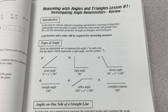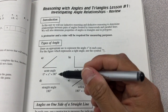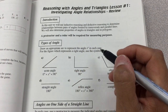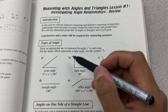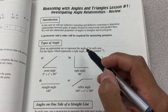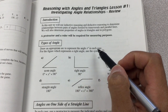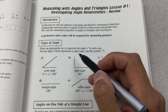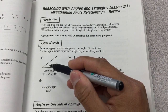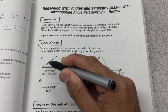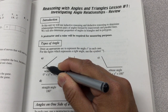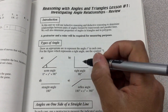Let's look at types of angles. For this first investigation, all we need to do is use an appropriate arc to represent the angle x degrees in each case. For the figure which represents a right angle, use the right angle symbol. First, I have an acute angle — x degrees is between 0 and 90 degrees — represented by this arc.